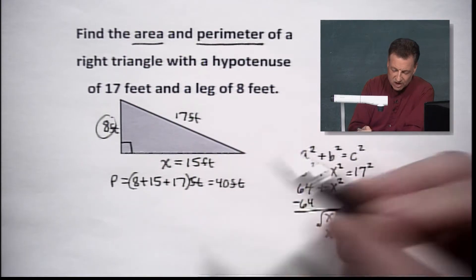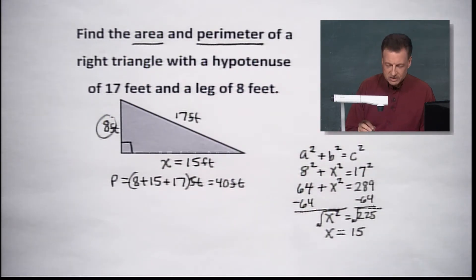23 and 17 gives us 40 feet. There's your perimeter. Pretty straightforward. You can add them in any order you want to, but all three of them get added together. That's pretty straightforward, isn't it? But you had to know 15 to get to the final answer.